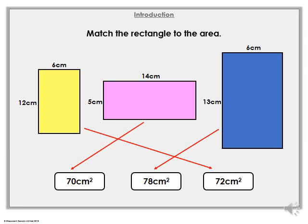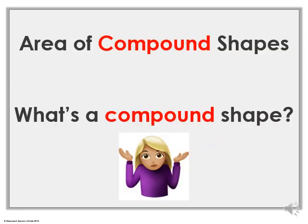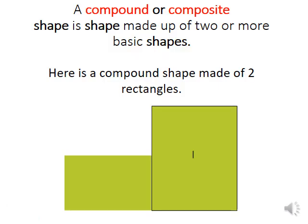So hopefully that's a little recap on area and how to find the area of a rectangle. This morning we're actually going to be looking at the area of a compound shape, and how do we find the area of a compound shape? A compound shape, or a composite shape — composite is another word for compound — is a shape that's made up of two or more basic shapes. As you can see below, here is a compound shape that's made up of two rectangles: rectangle one and rectangle two.